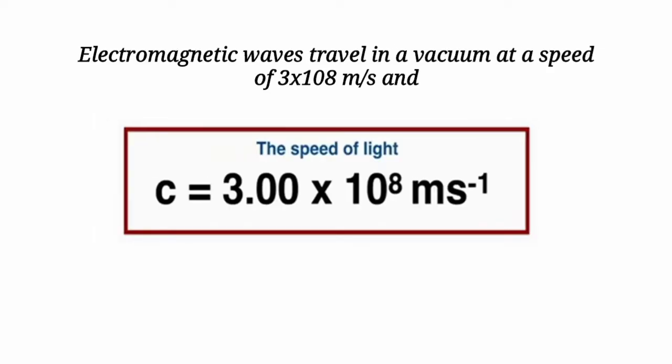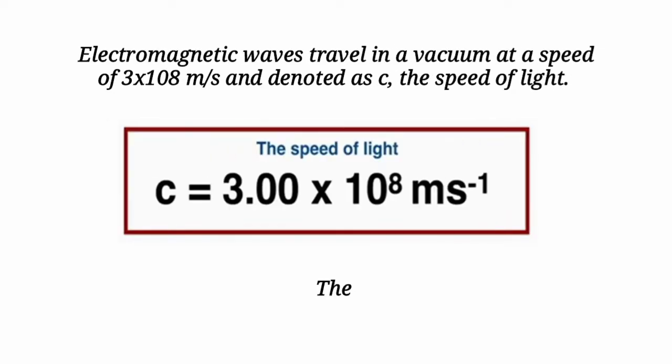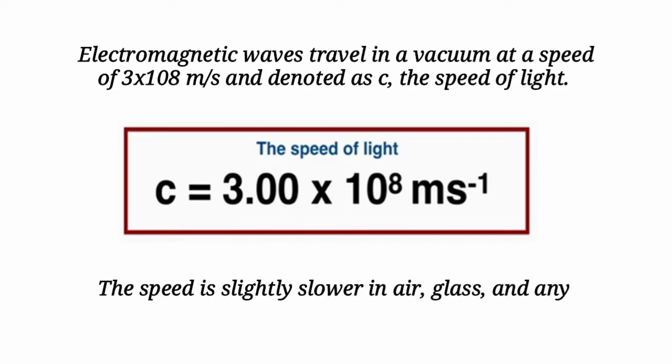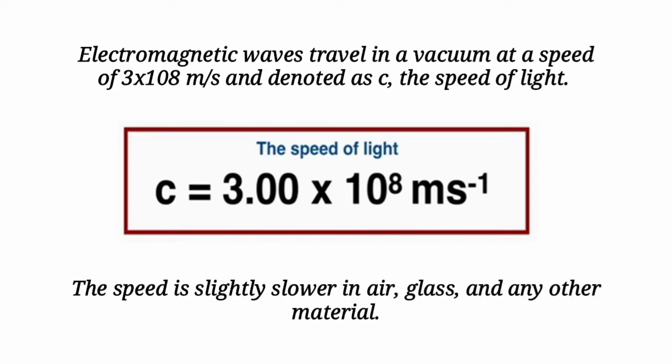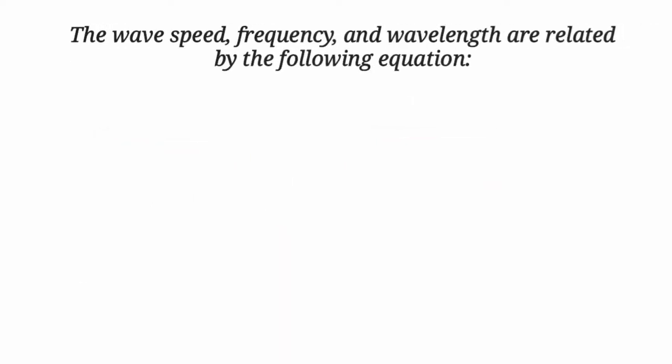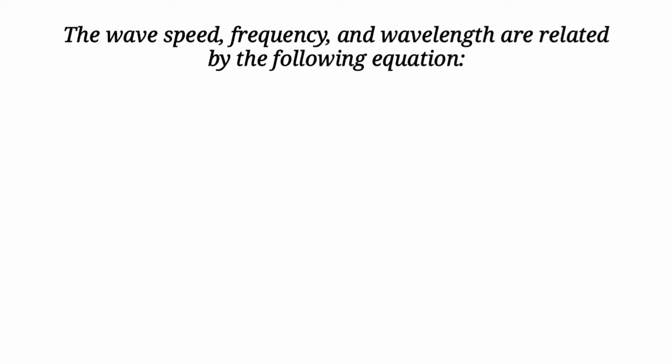Since all EM waves have the same speed, which is equal to the speed of light, this means that as the wavelength decreases, the frequency of the wave increases. Electromagnetic waves travel in a vacuum at a speed of 3×10⁸ meters per second, denoted as c, the speed of light.